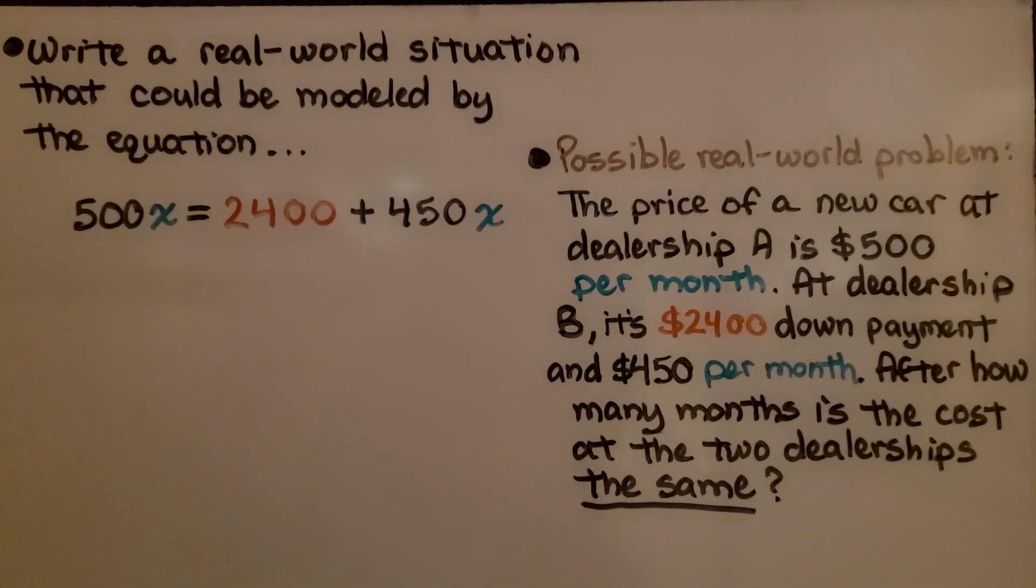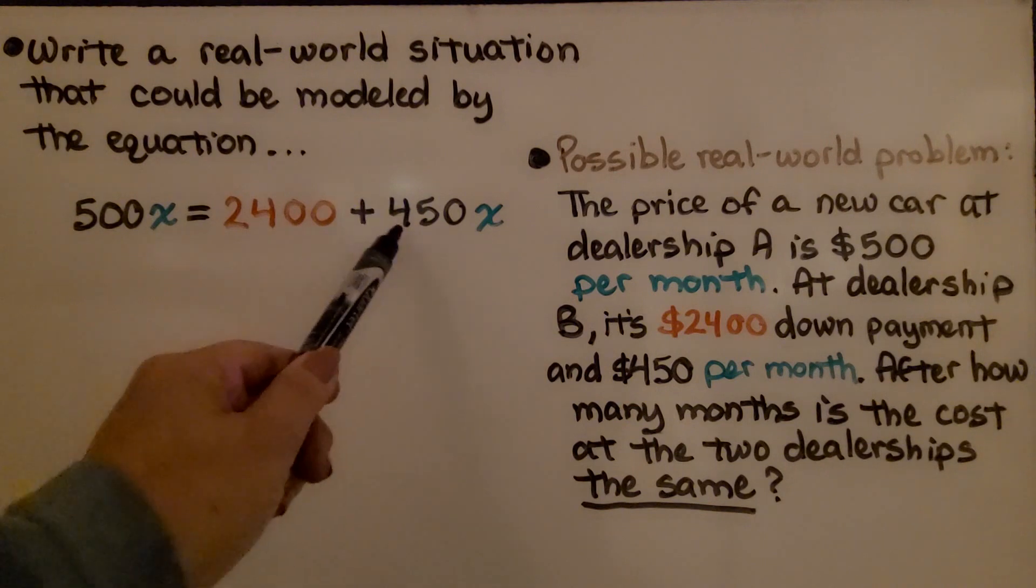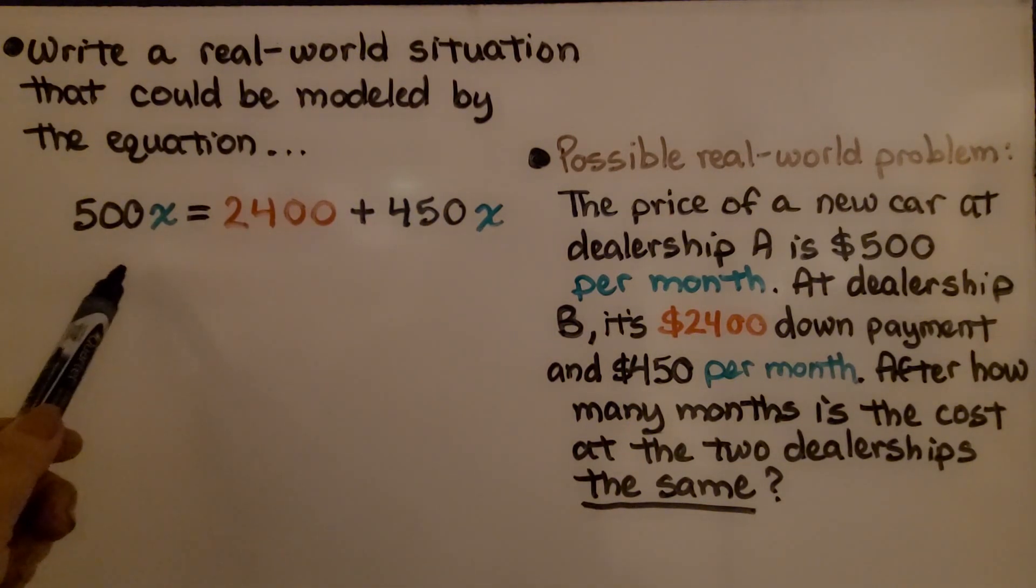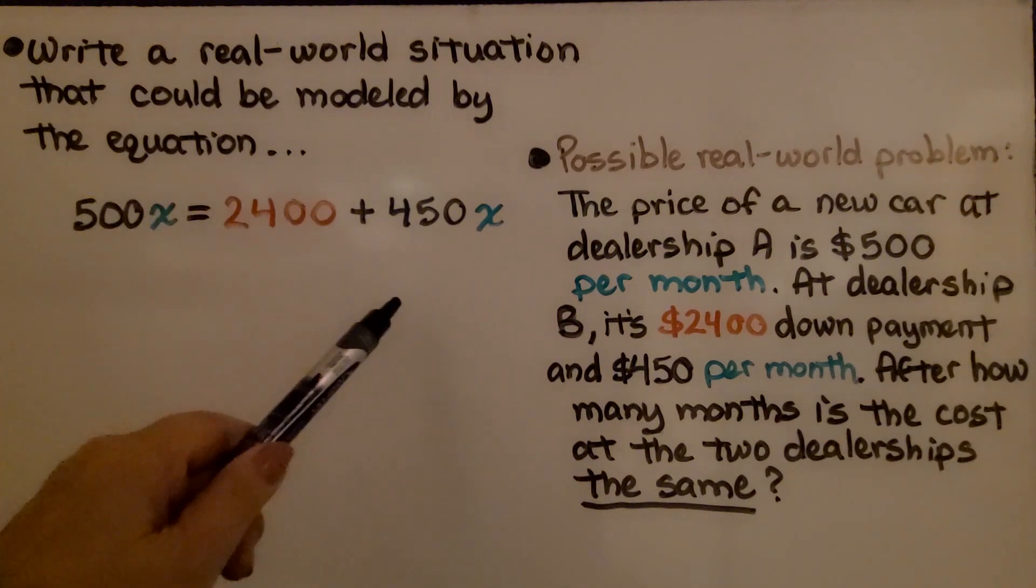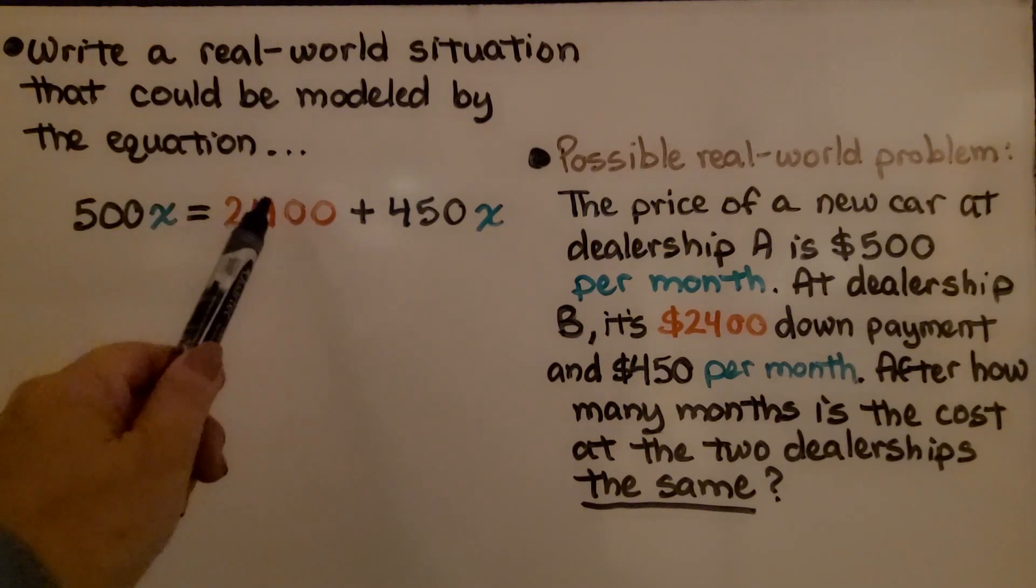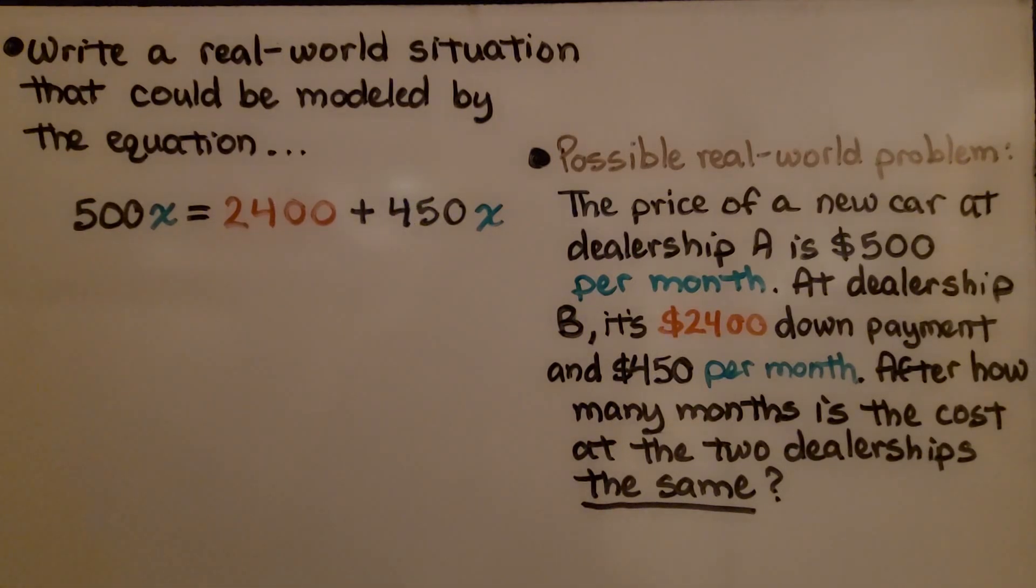It's telling us again to write a real-world situation that could be modeled by the equation 500x is equal to 2400 plus 450x. Now this is the same as the equation that we just did, except it's written in a different order. Now we have 500x on this side of the equal sign, and we have our constant and our variable term on the right side.